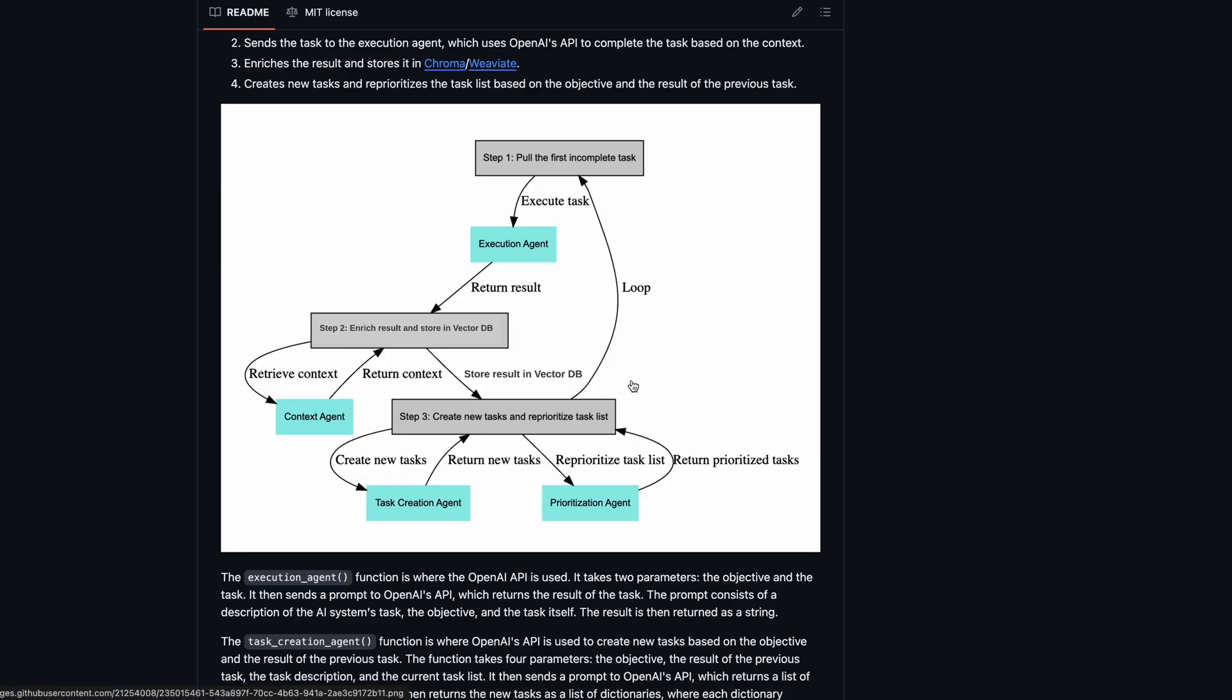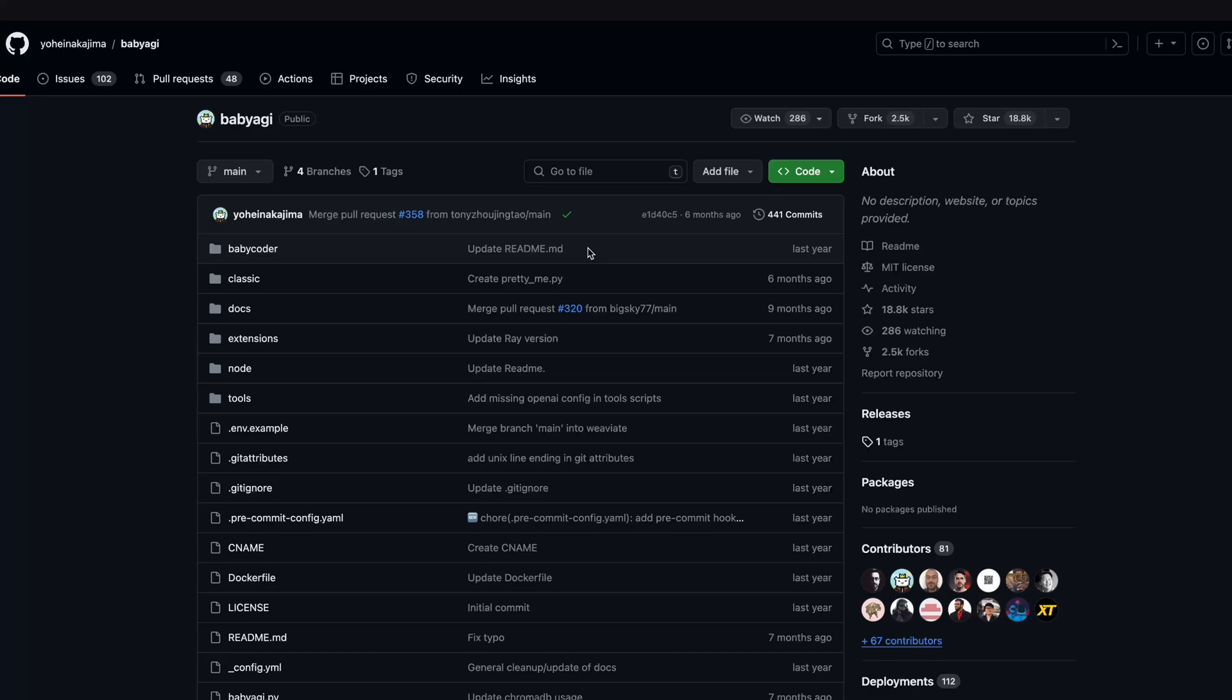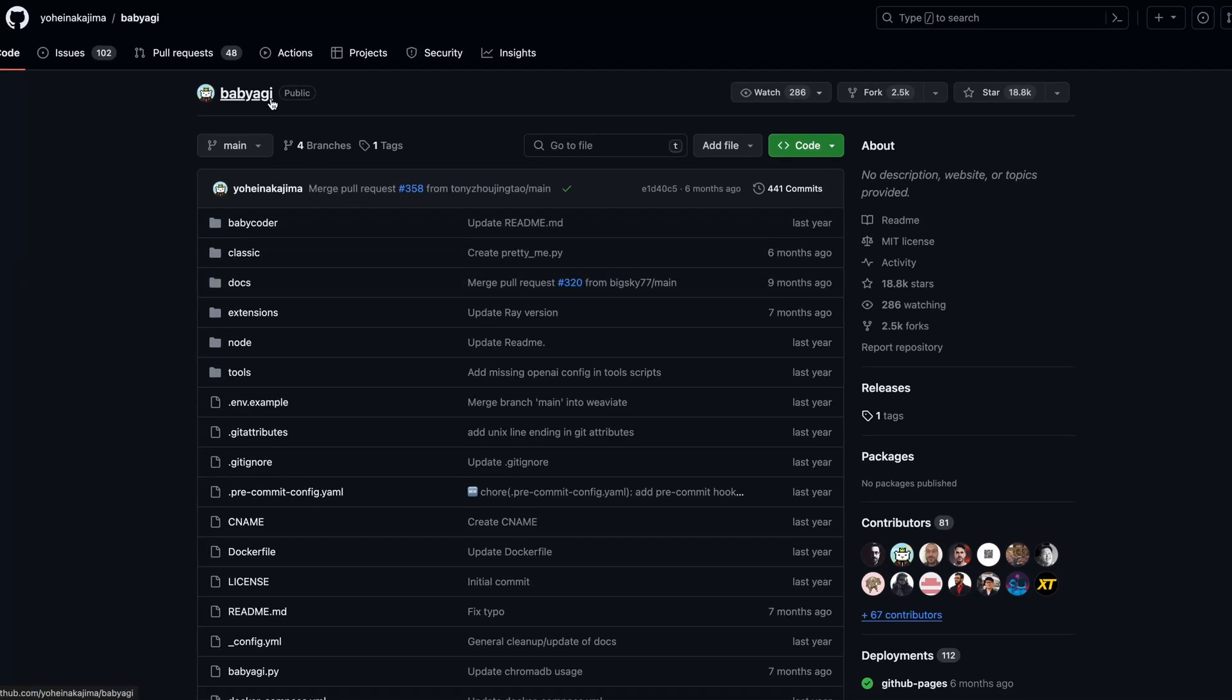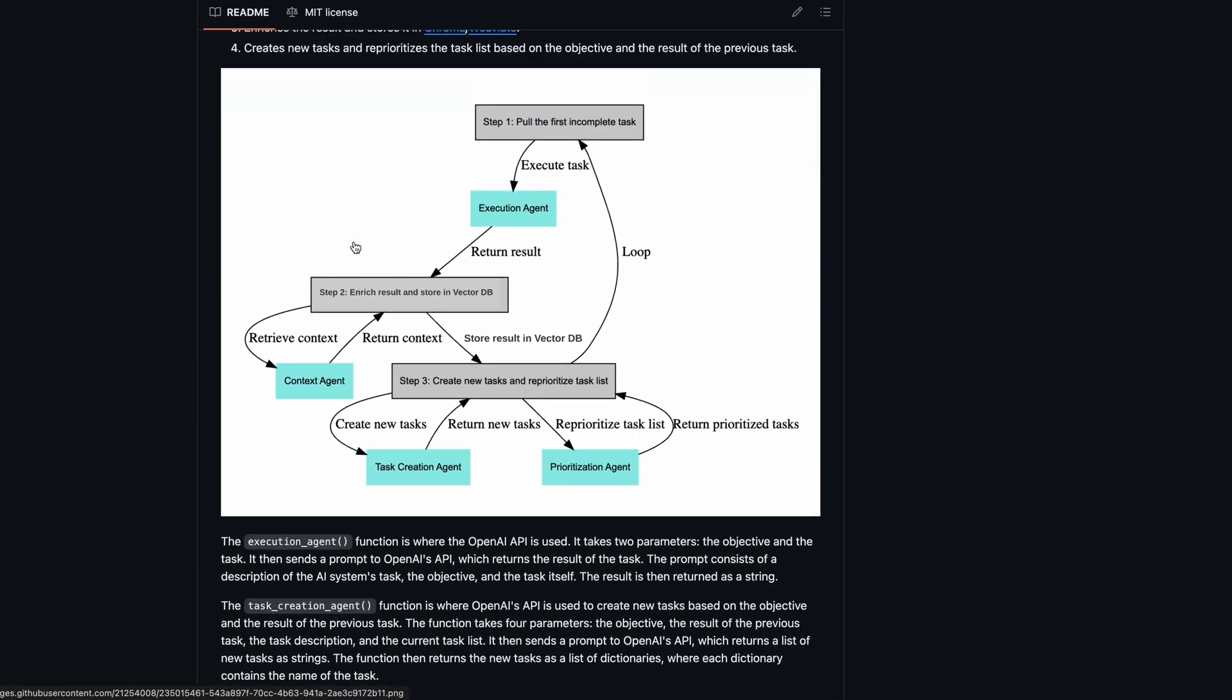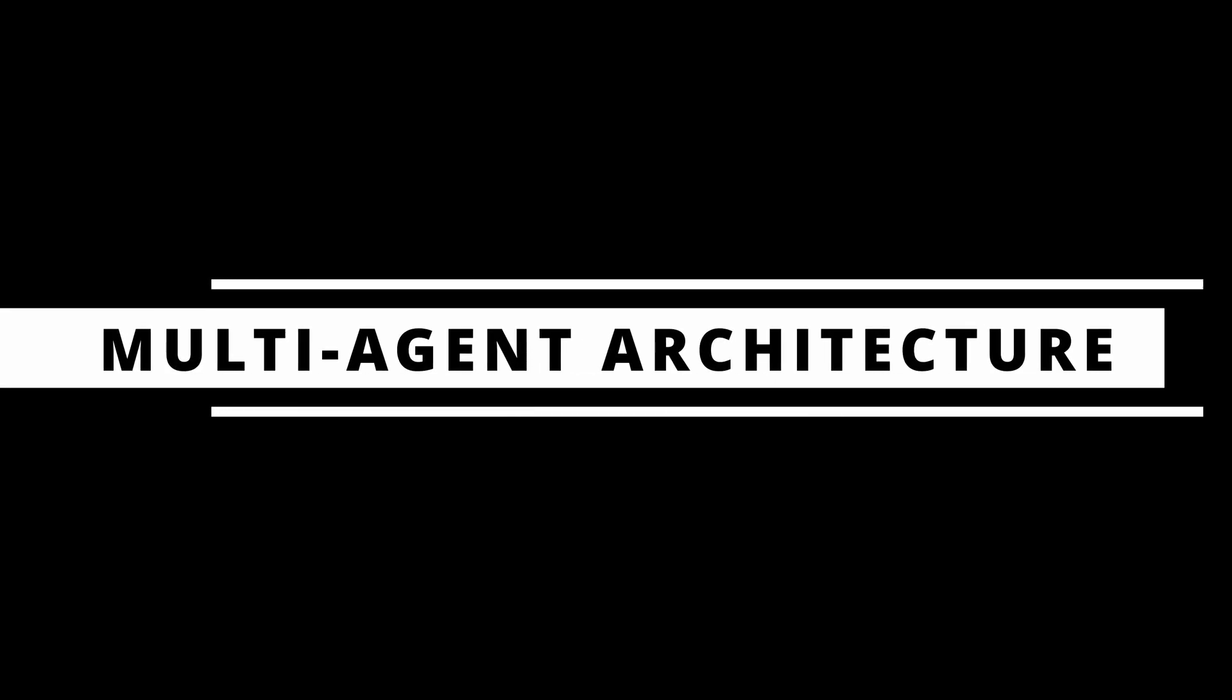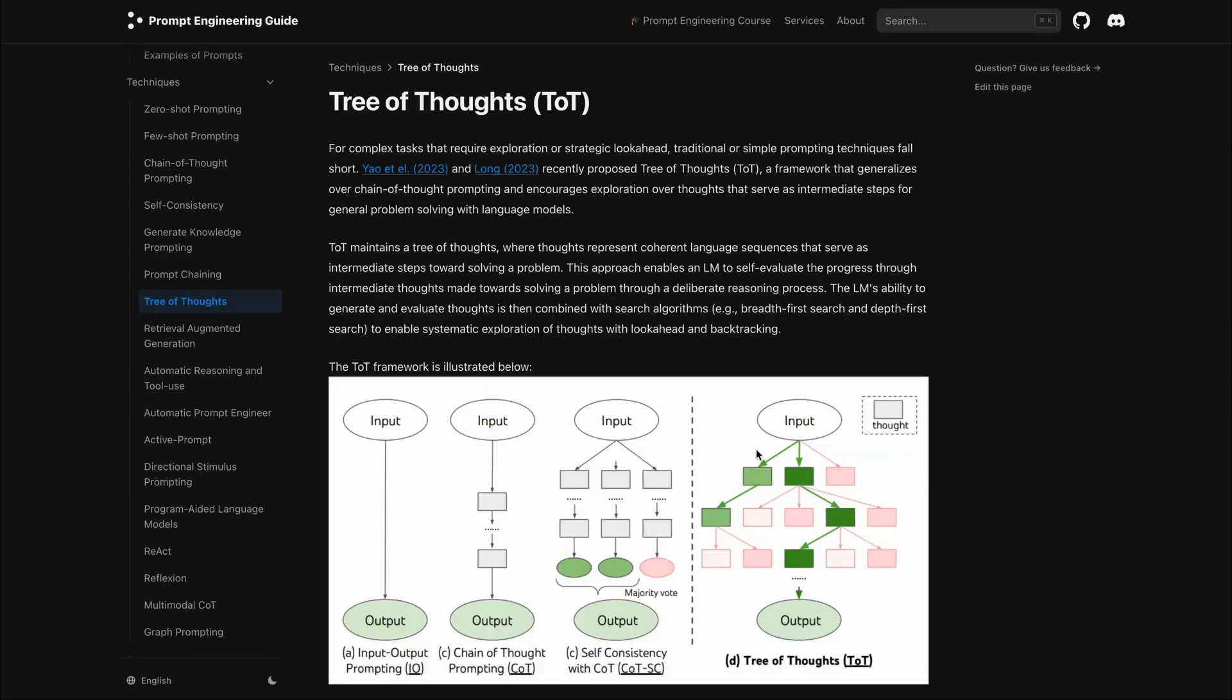After AutoGPT, some other autonomous AI agents also enter the market with slightly updated architecture like baby AGI, but it didn't really perform any better than AutoGPT. The next natural progression from the standalone autonomous AI agents architecture was multi-agent architectures. And it's also inspired by Tree of Thought prompting.